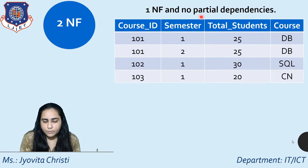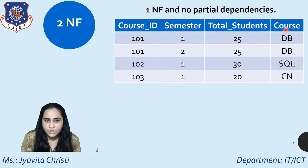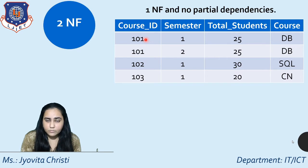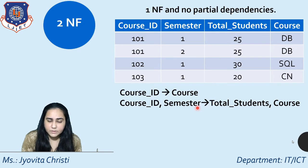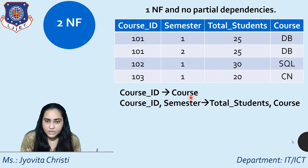Consider a table containing course_id, semester, total number of students, and course name. Each course has a unique ID and a semester, with total students taking that course and the course name recorded. The functional dependencies here are: course_id determines course; and course_id together with semester determines total_students and course.